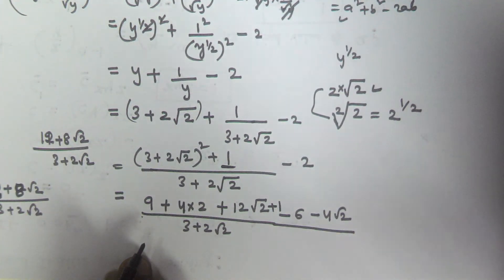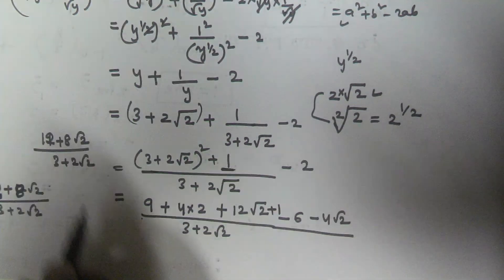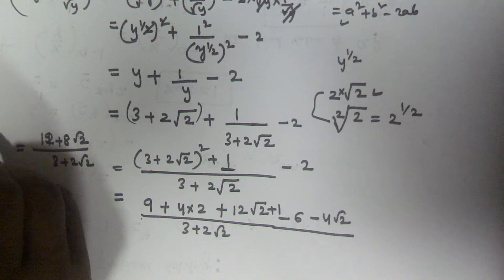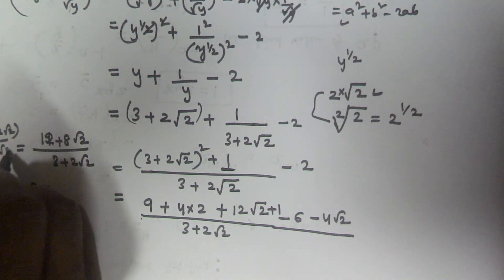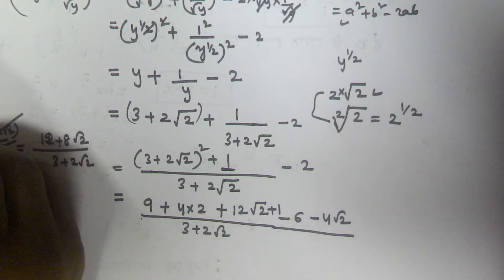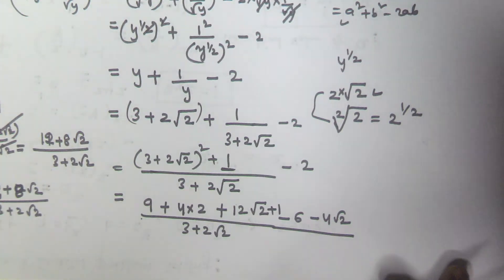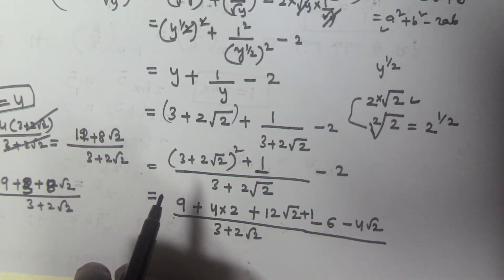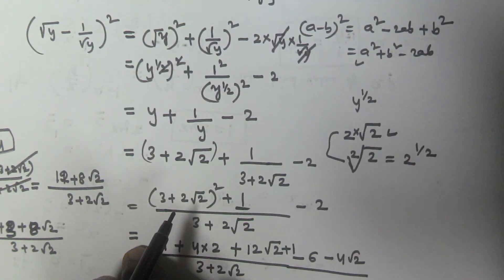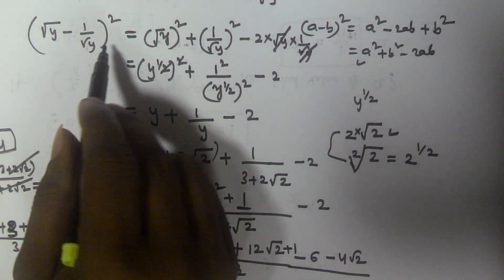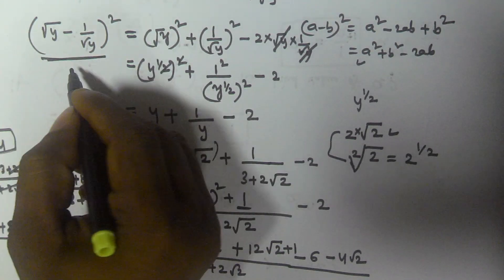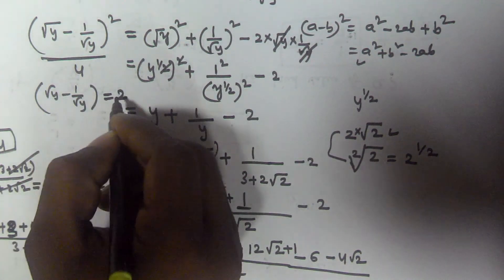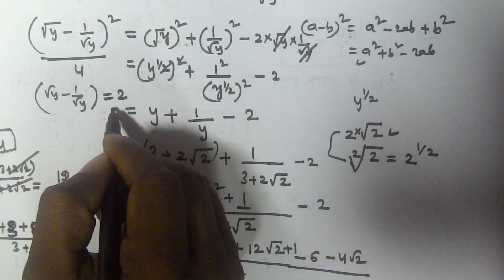If we factor 4 out of the numerator, 12 plus 8 root 2 becomes 4 times (3 plus 2 root 2). So we have 4 times (3 plus 2 root 2) divided by (3 plus 2 root 2). The (3 plus 2 root 2) terms cancel, and the result is 4. So root y minus 1 by root y, squared equals 4, which means root y minus 1 by root y equals 2.